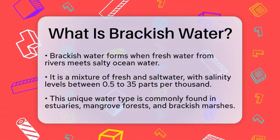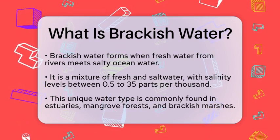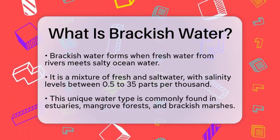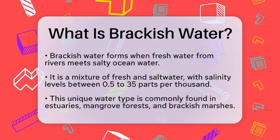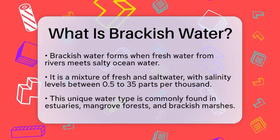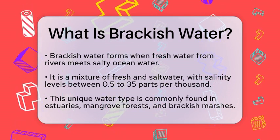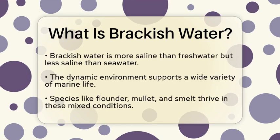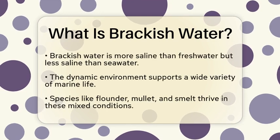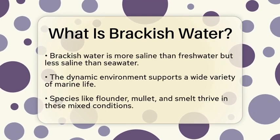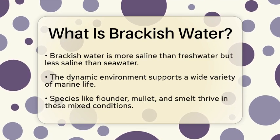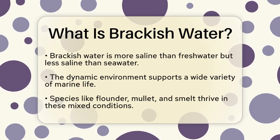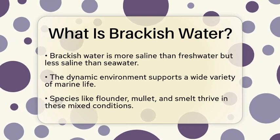The salinity of brackish water can vary quite a bit, usually ranging from 0.5 to 35 parts per thousand. This means it has a higher salt concentration than freshwater but is not as salty as the ocean. The mix of fresh and salt water creates a dynamic environment that supports a wide variety of marine life.